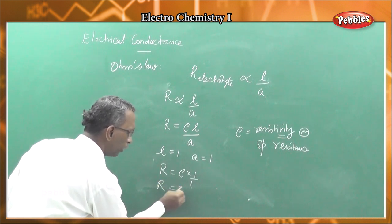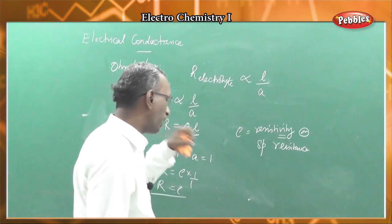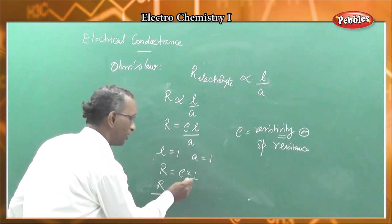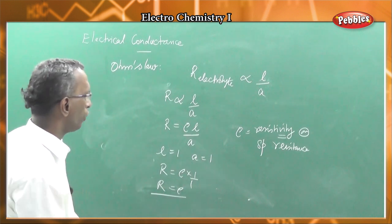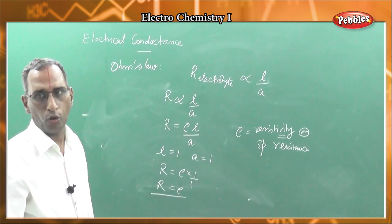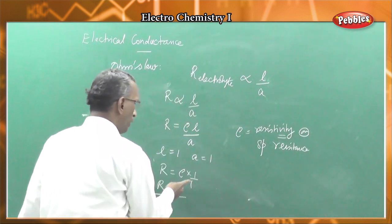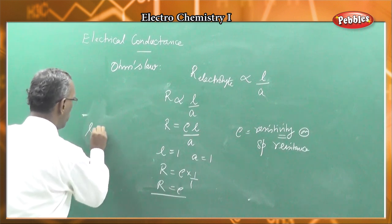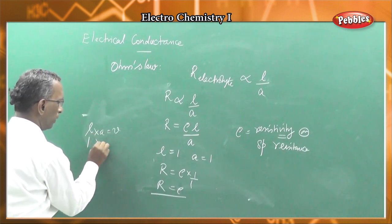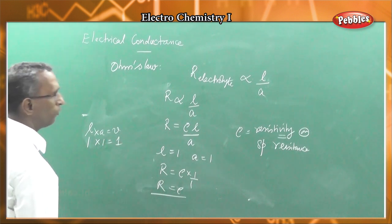Resistivity, also called specific resistance, is the resistance offered by unit volume of the substance. When length L equals 1 and area A equals 1, the volume is also unity, so R equals rho. Therefore, specific resistance is the resistance offered by unit volume.